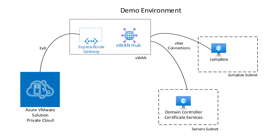For this demo, we have a very simple infrastructure: a VLAN hub with an express route connection to AVS and two VNet peerings — one to the jump box and one to the domain controller.